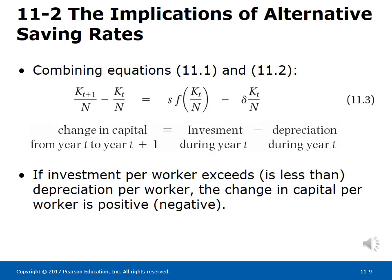Section 11-2: The Implications of Alternative Saving Rates. Combining equations 11.1 and 11.2 gives equation 11.3: the change in capital from year t to t+1 equals investment during year t minus depreciation during year t. Specifically, K_{t+1}/N minus K_t/N equals s times f(K_t/N) minus delta times K_t/N. If investment per worker exceeds depreciation per worker, the change in capital per worker is positive; if less, it is negative.